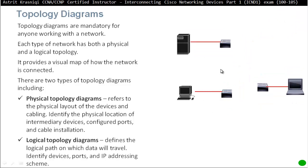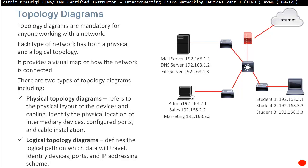The second type of topology is a logical topology. This defines a logical path on which the data will travel. For example, you identify devices, ports, and IP address scheme. As you can see, it's the same topology as before but this time I don't draw my three servers — I just write the names, the IP addresses, and the ports. It just identifies how the path is going to get from the source to the destination, including IP addresses for end devices and laptops.